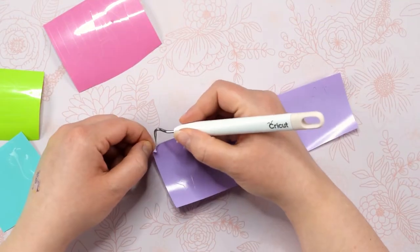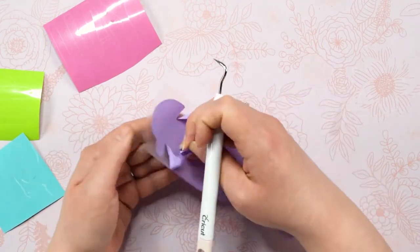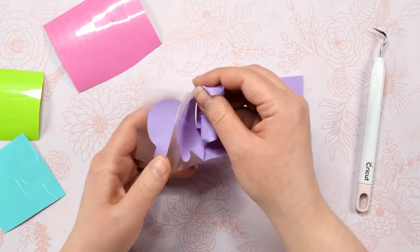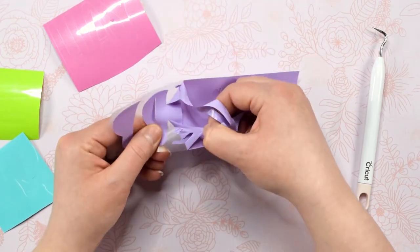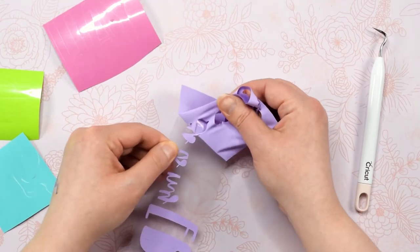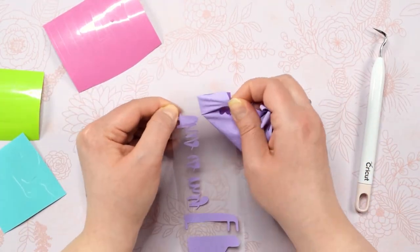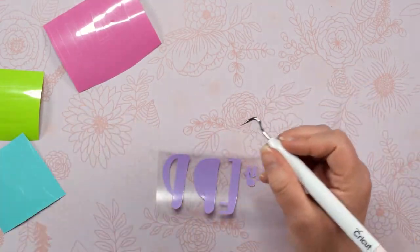Now we're going to start weeding the design. I'm using a Cricut weeding tool for this part and I highly recommend you do as well. I've linked all of the materials I recommend for this project below. When I'm weeding, the first thing I do is get the bulk of the excess vinyl peeled off. I've sped up this part of the video, but when you're weeding, especially if you're new to all of this, make sure you take your time with this part so you don't accidentally tear or weed the wrong part of the design.